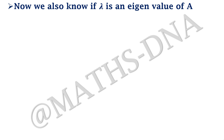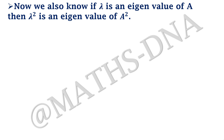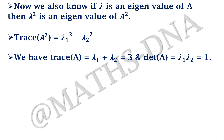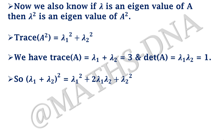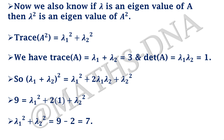We have to find the trace of A squared. We know that if λ is an eigenvalue of A, then λ² is an eigenvalue of A². So trace of A² = λ₁² + λ₂². We already have λ₁ + λ₂ = 3 and λ₁·λ₂ = 1. Squaring λ₁ + λ₂ gives (λ₁ + λ₂)² = λ₁² + 2λ₁λ₂ + λ₂². Substituting: 9 = λ₁² + 2(1) + λ₂², so trace of A² = 9 − 2 = 7.